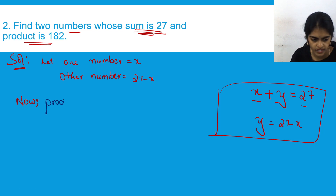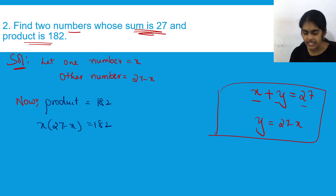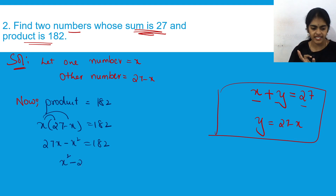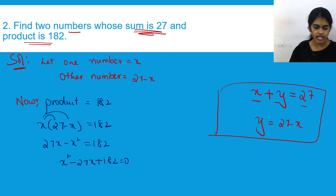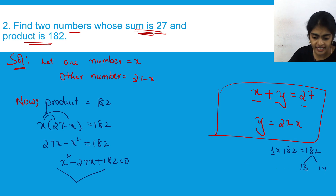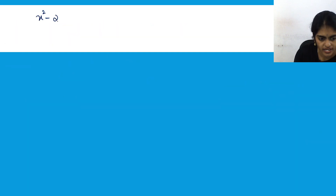Expanding: 27x - x² = 182. Rearranging to standard form: x² - 27x + 182 = 0. Now factorize: 1 × 182 = 182. We split 182 as 13 and 14, since 13 × 14 = 182 and 13 + 14 = 27. Since we need -27, we take -13 and -14.